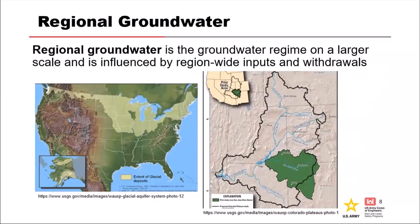On the right is the Colorado Plateau aquifer outlined in black, with a study area shown in green. Your project might be within this larger area and could benefit from researching available data to start understanding how it fits into this regional context. On the lower left is the extent of glacial aquifers at an even larger scale — everything highlighted in yellow is considered part of a very large scale glacial system.